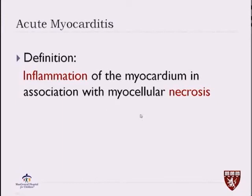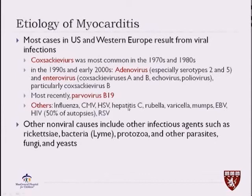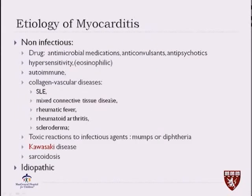The etiology of myocarditis is mostly viral in children. The most common viruses are enteroviruses such as Coxsackievirus A and B, echovirus, adenovirus, parvovirus B19, and more recently influenza, as well as EBV and RSV. In the New England area, we also consider Lyme disease, but there are other parasites that can cause acute myocarditis. In older children, we can have a reaction to medications or eosinophilic myocarditis hypersensitivity. It can be associated with collagen vascular diseases such as lupus or mixed connective tissue disease, and previously mentioned Kawasaki. When we don't find a cause, we call it idiopathic.